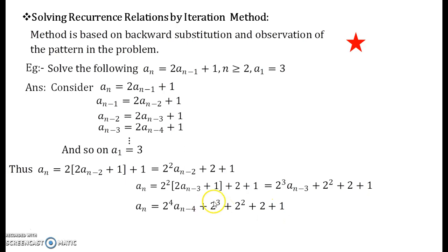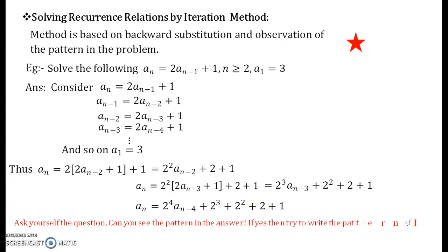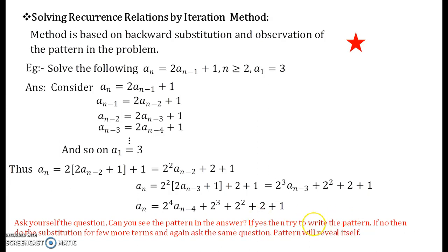Now observe carefully — some pattern is starting to form. Try to write the pattern if you are able to guess it correctly. Ask yourself: can you see the pattern in the answer? If yes, write it. If no, do the substitution for a few more terms — write for aₙ₋₄, aₙ₋₅, and a few more. After a few steps the pattern will surely reveal itself, so don't worry.